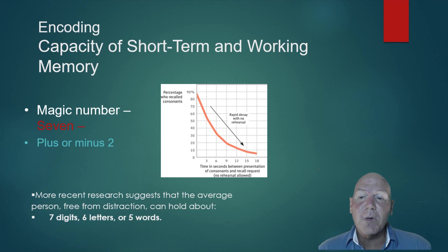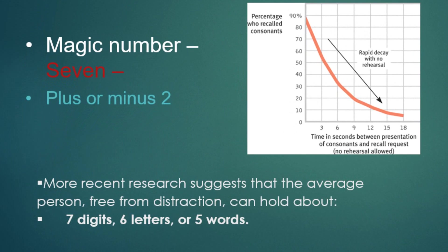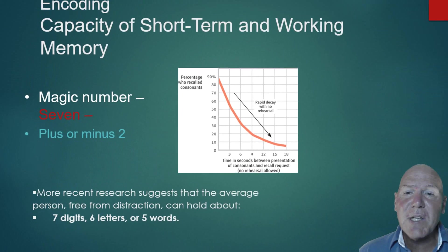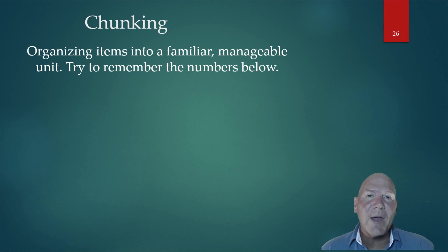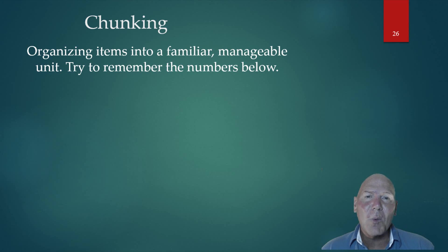Along with this magic number, more recent research has shown that if it's digits, we can recall about seven; if it's letters, about six; or about five words. But we can actually fool that system — we can chunk information into meaningful bits and store a little bit more information than those five to nine pieces.